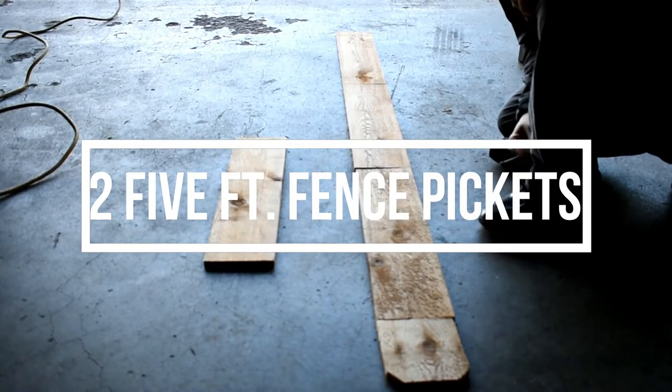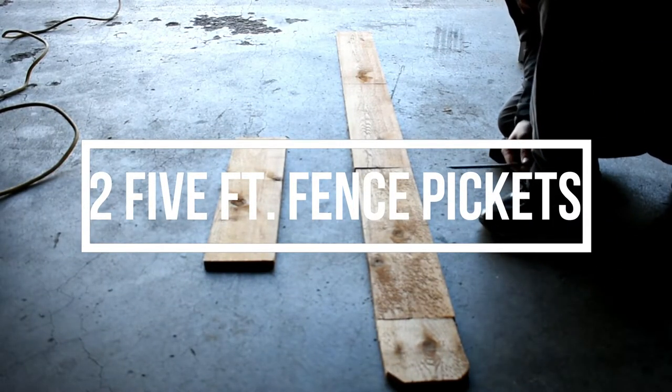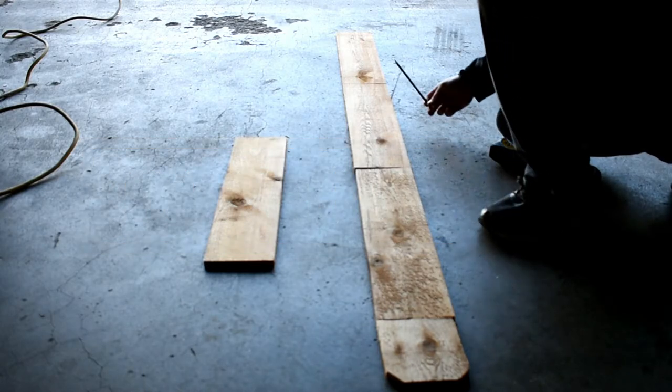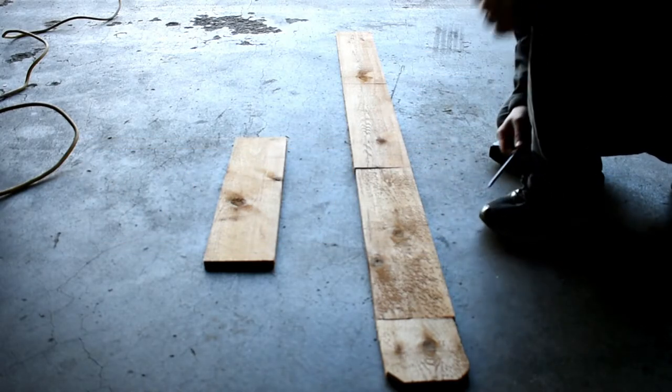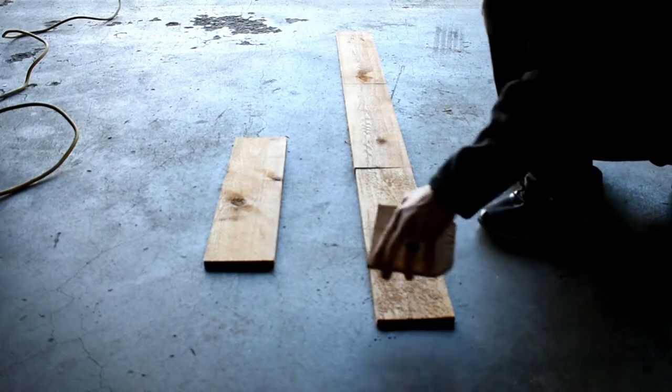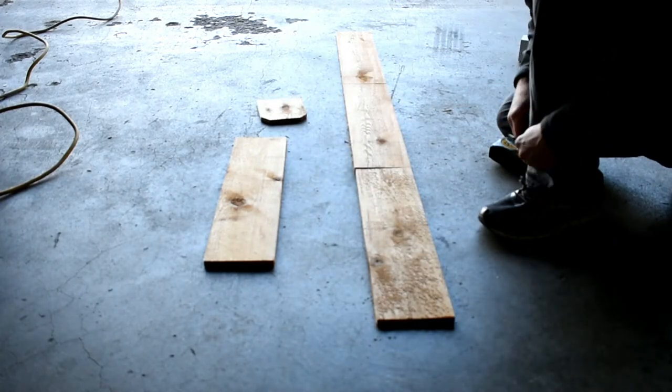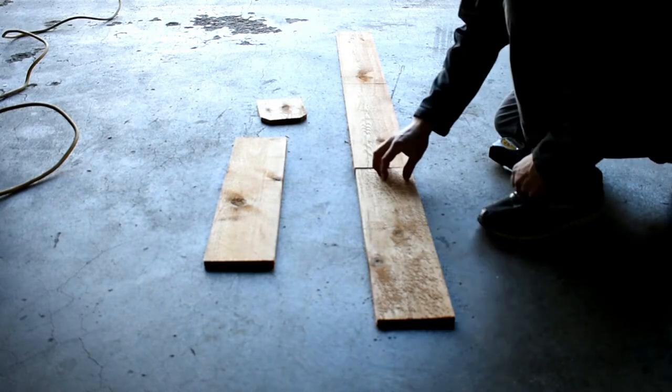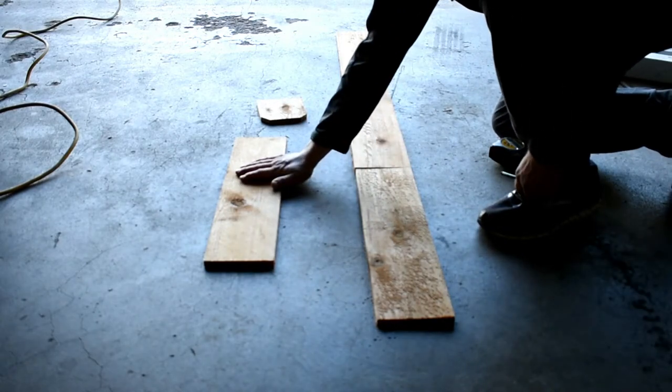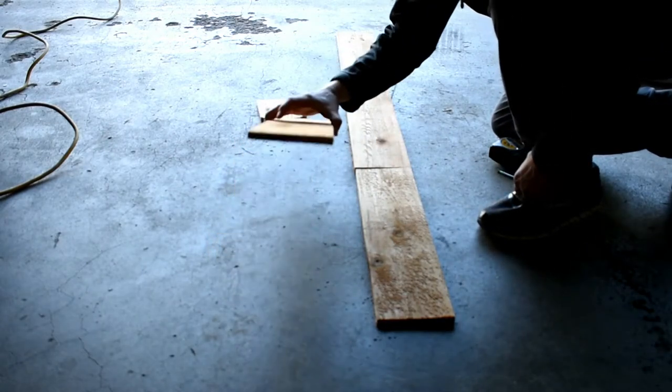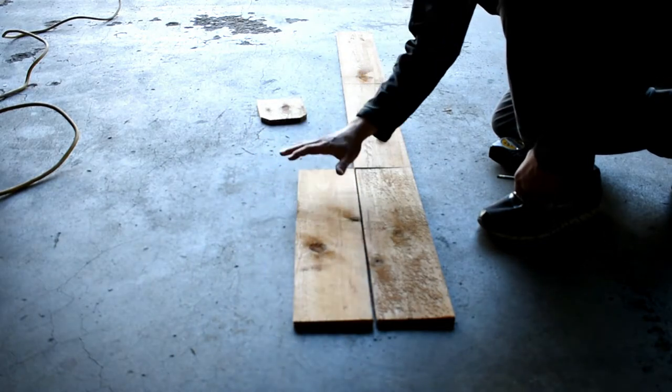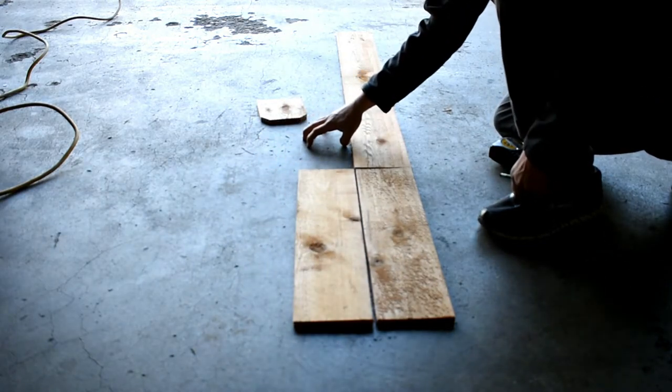Okay, we want to take one of these pickets and we want to mark it out at 21 inches. So 21, 21, 21. You're going to have one little leftover piece and that should be about 8 to 10 inches long. And then you're going to take the second picket and you're going to make one more at 21. And then you're going to save the drop off to make the frame.